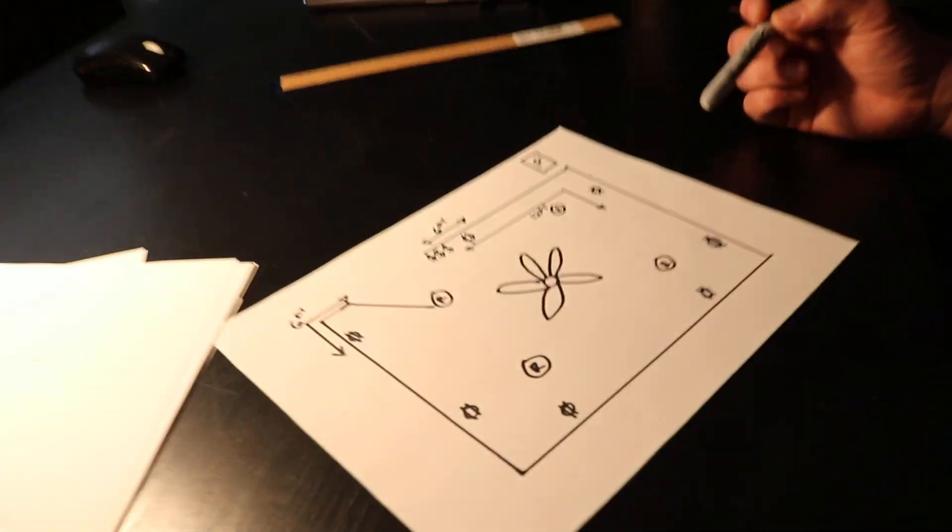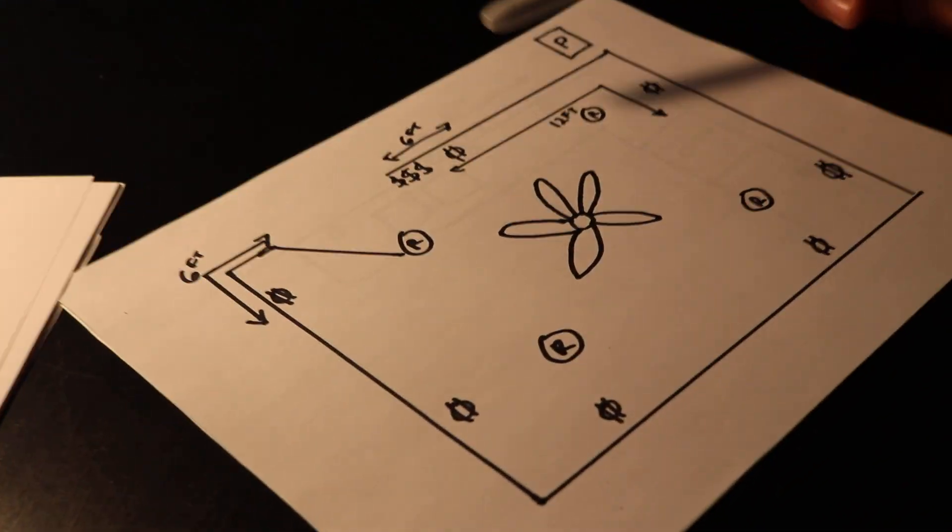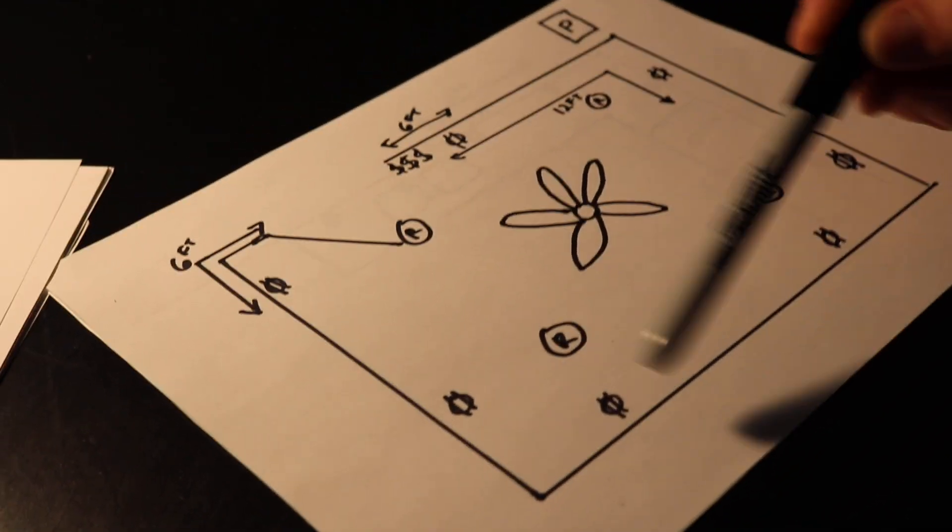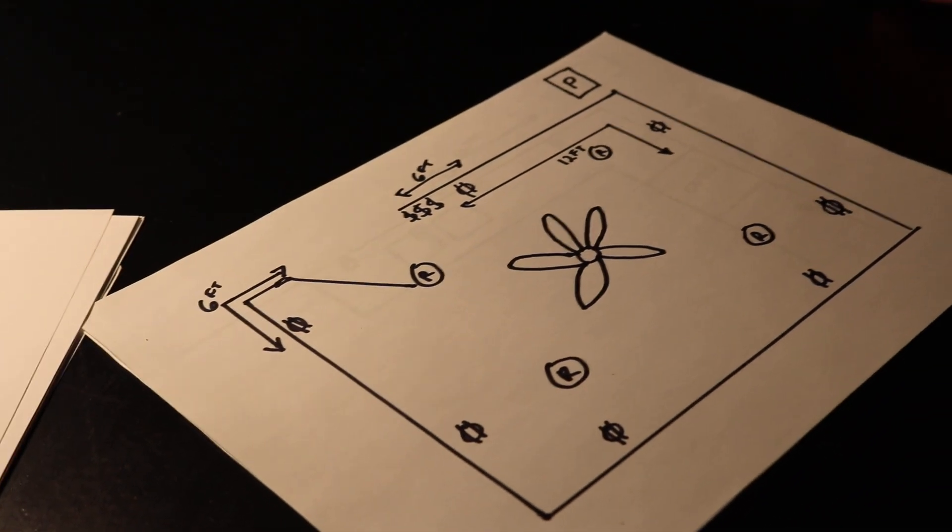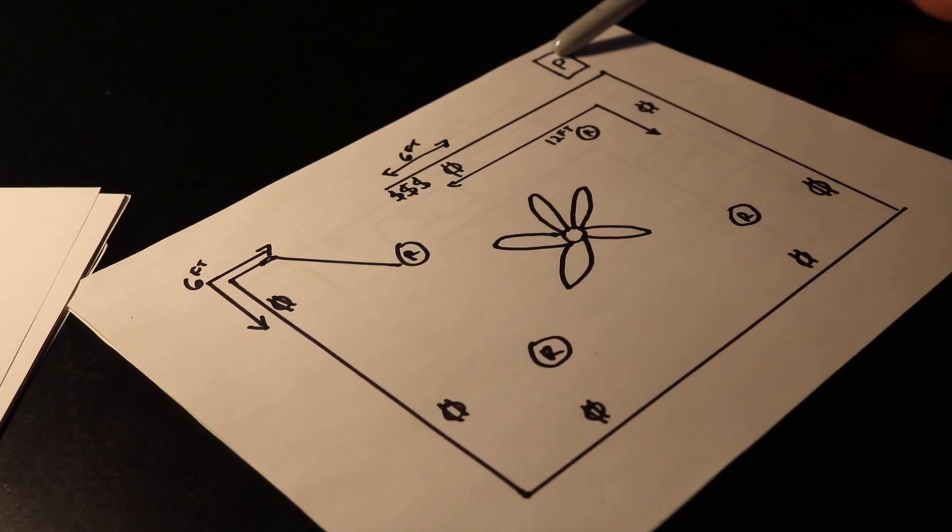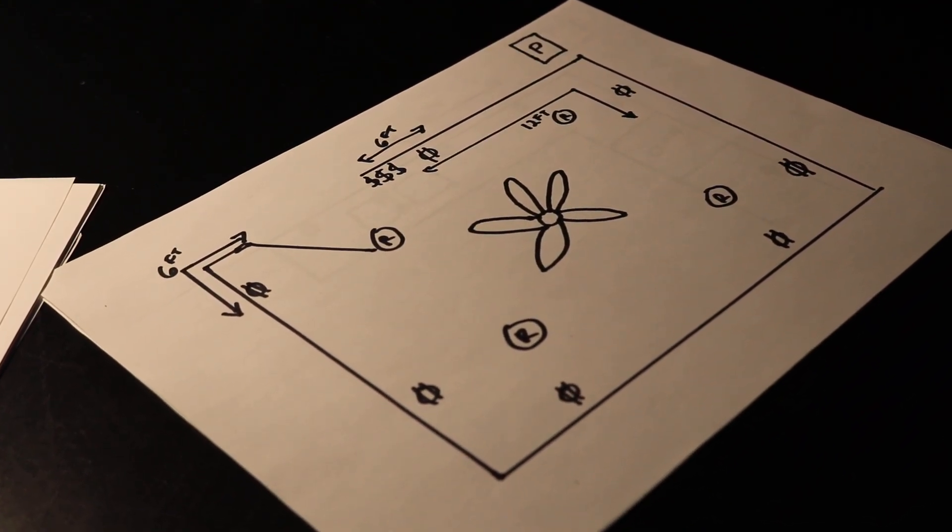So here we are. I'm just going to jump right in. This is a bedroom and this is a typical bedroom layout. We have three switches, one, two, three, four, five, six, seven outlets, four recessed cans, and a ceiling fan. Here in the corner this is a panel and I'm going to illustrate to you how this will be wired.